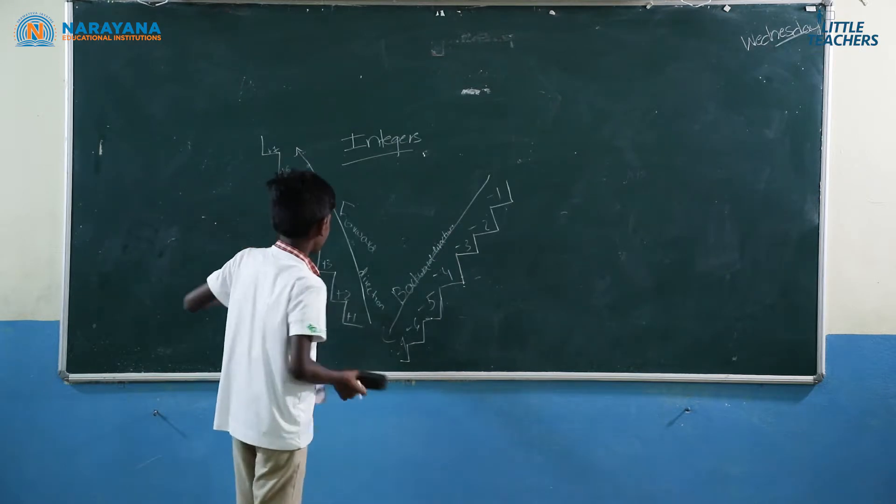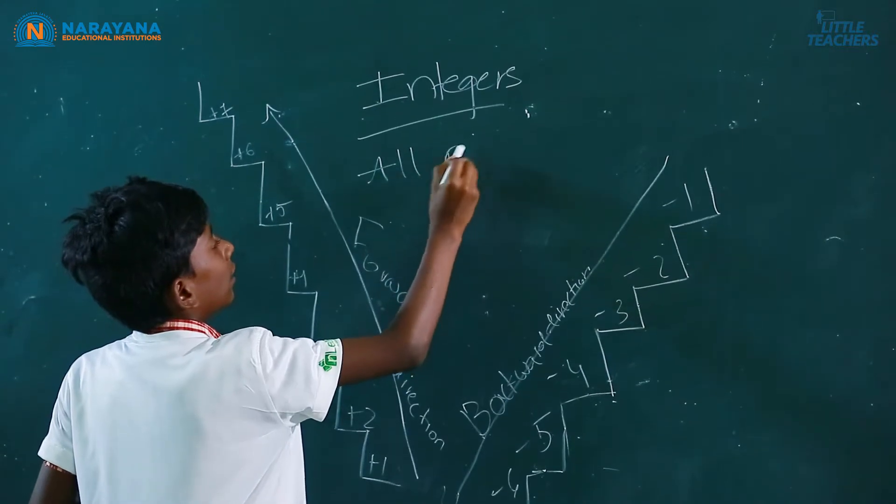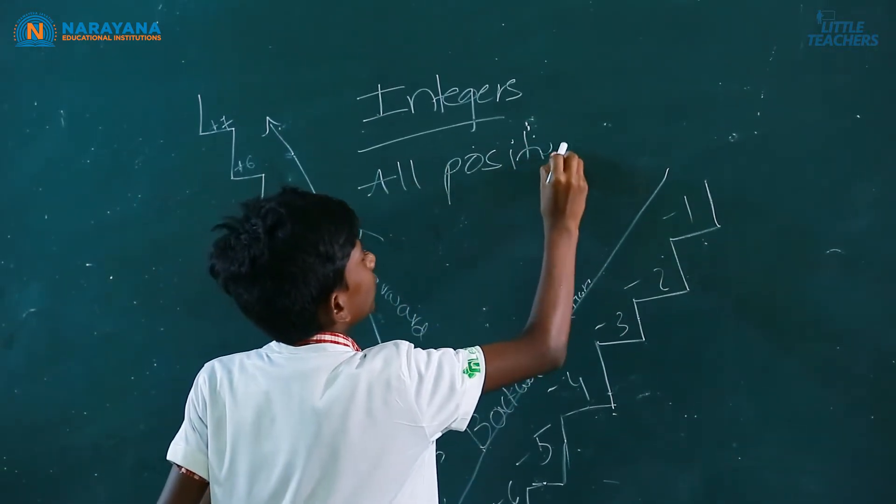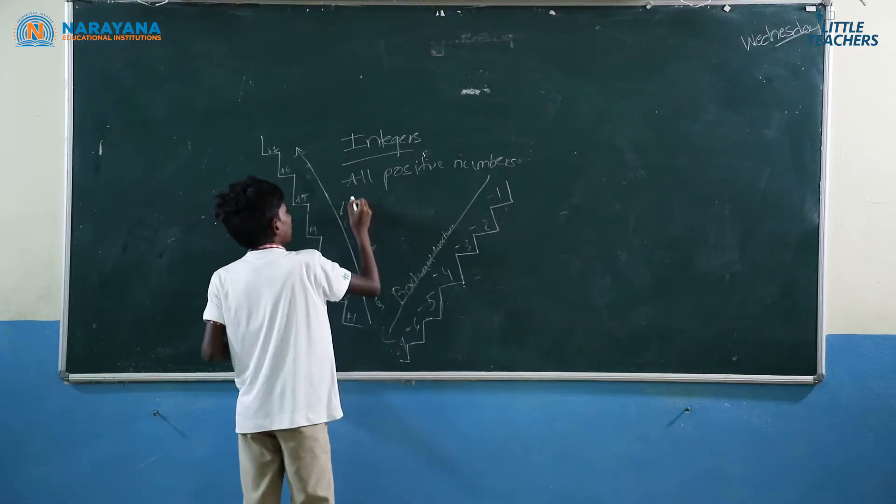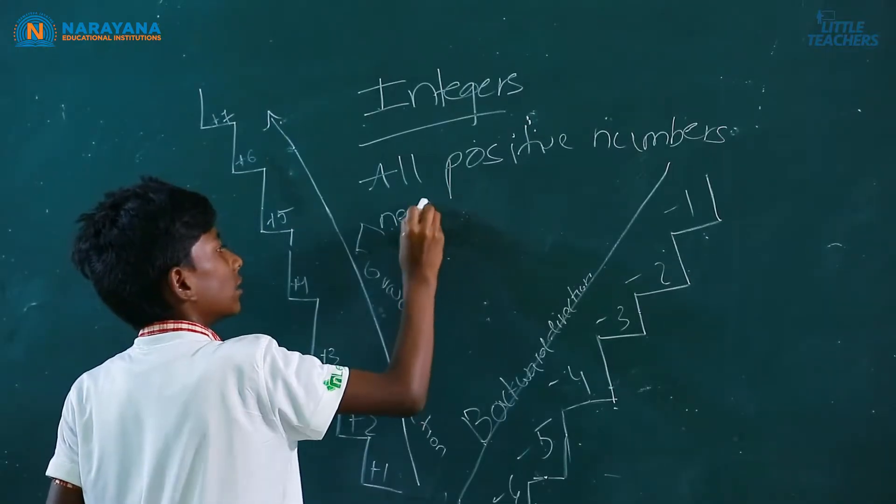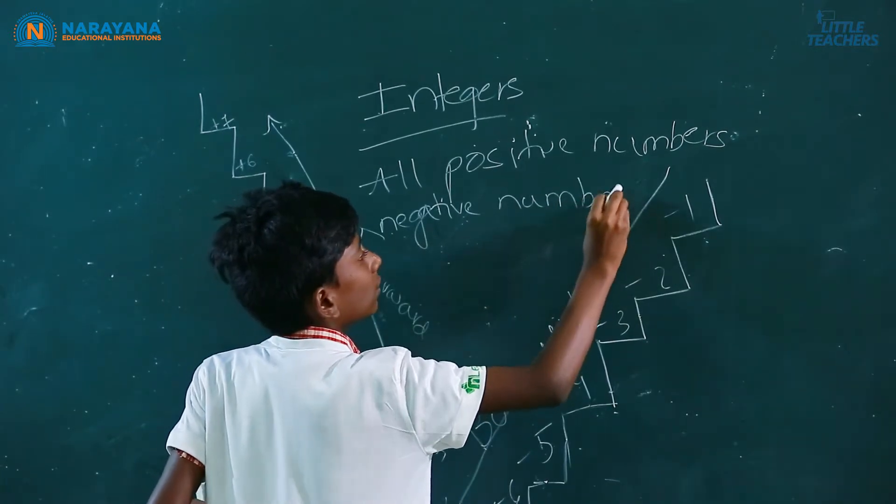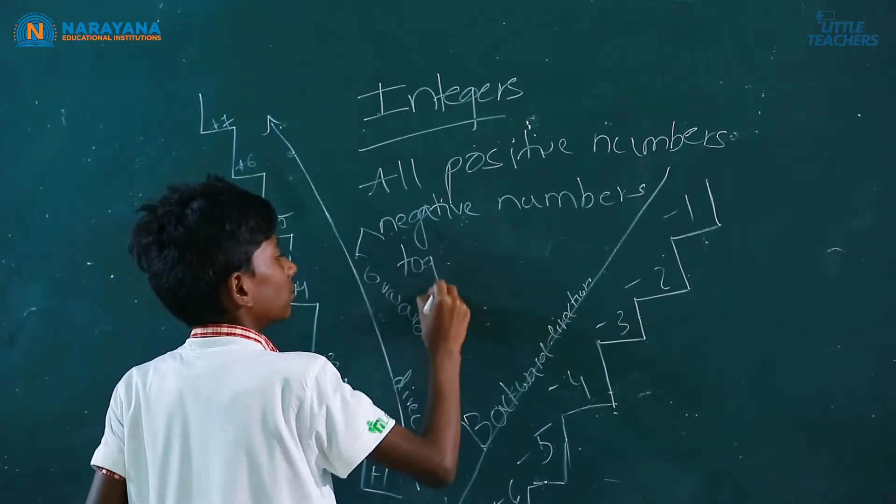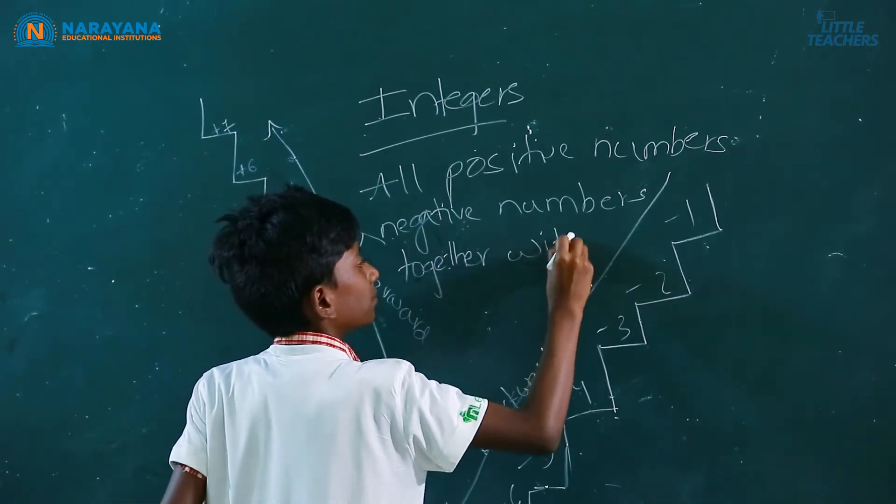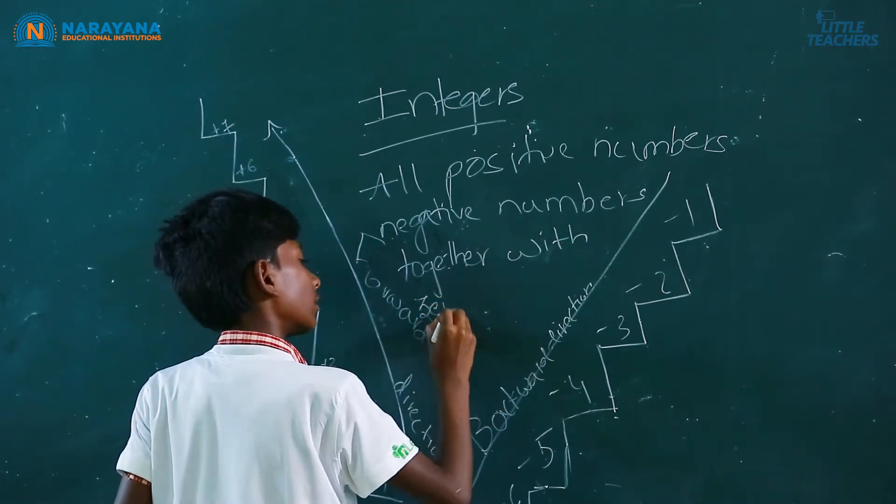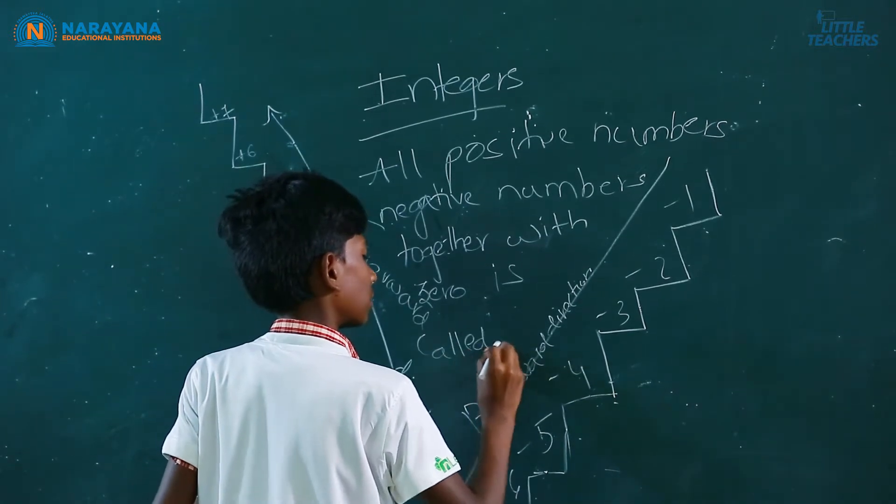This is an example of my friend's situation and integers. All the positive numbers, negative numbers, together with 0, is called integers.